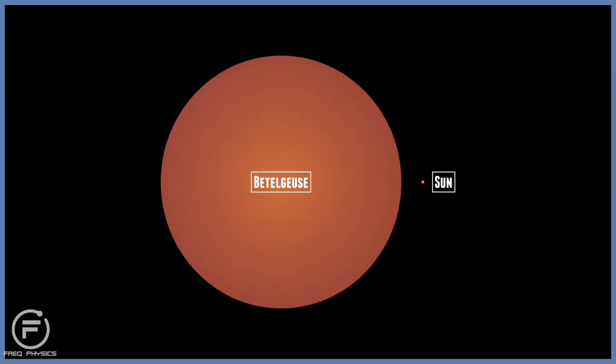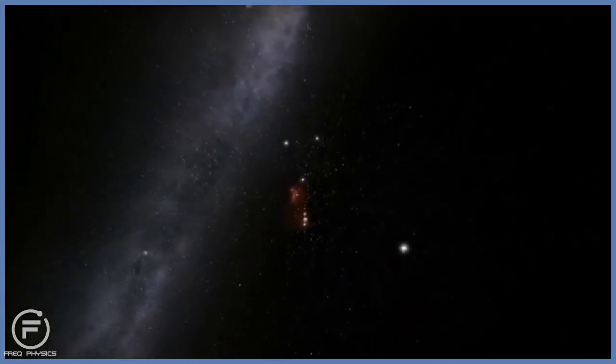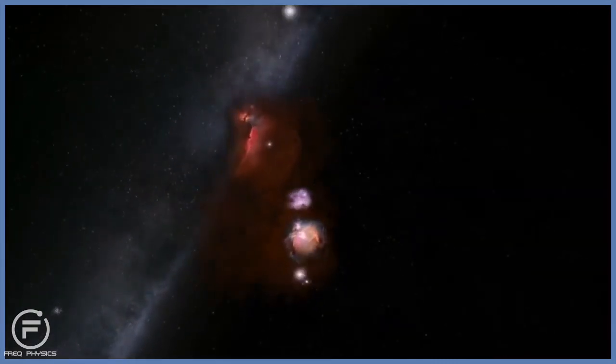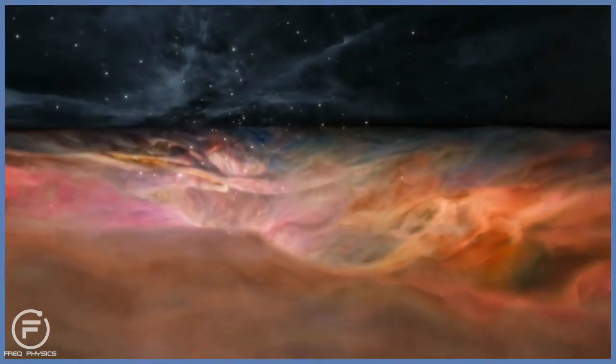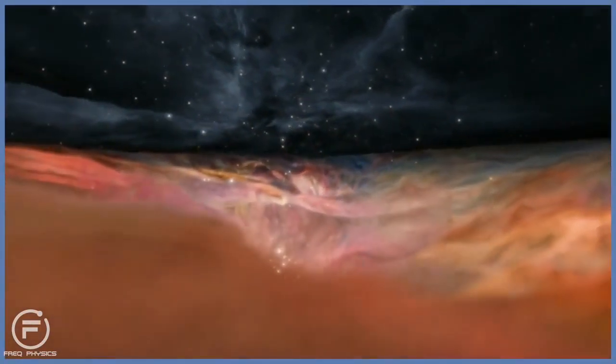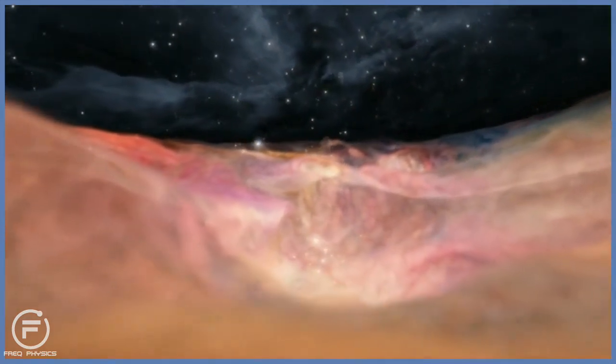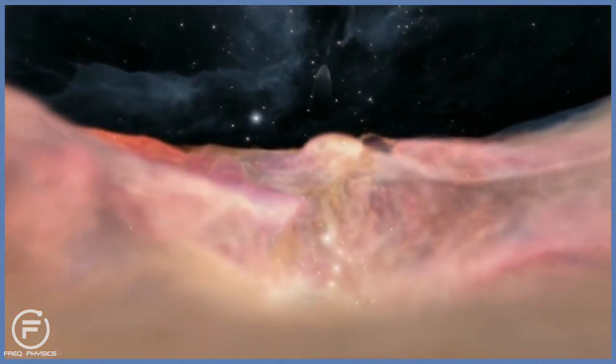In the same constellation of Orion, there is also the Orion Nebula. This is a place where new stars are forming. This is at a distance of 1500 light years, meaning that the light from this object left 1000 years before the invention of the telescope.